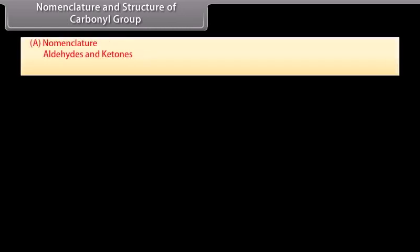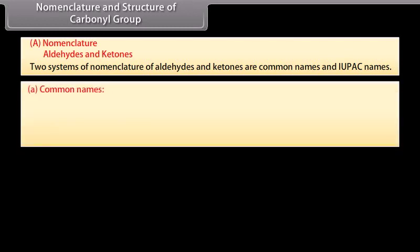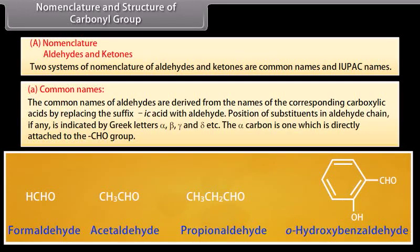Two systems of nomenclature of aldehydes and ketones are common names and IUPAC names. The common names of aldehydes are derived from the names of the corresponding carboxylic acids by replacing the suffix 'ic acid' with 'aldehyde'. Position of substituents in the aldehyde chain, if any, is indicated by Greek letters alpha, beta, gamma, and delta. The alpha carbon is the one which is directly attached to the aldehyde group.